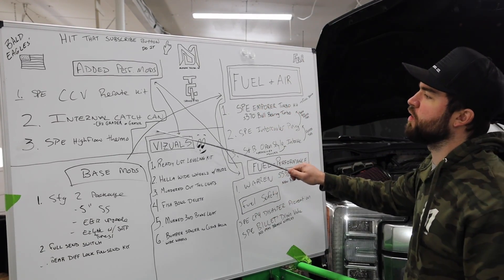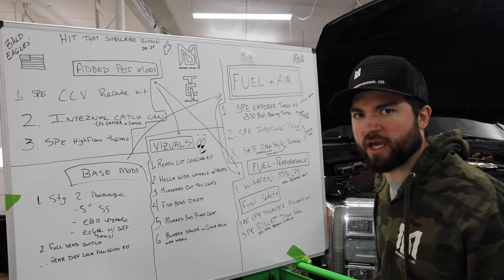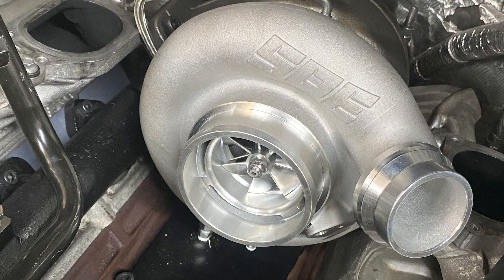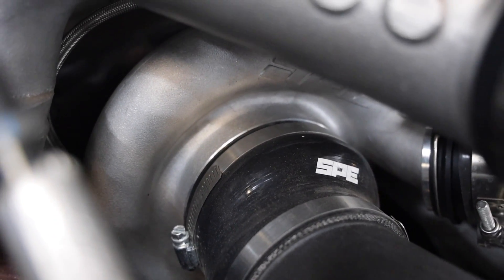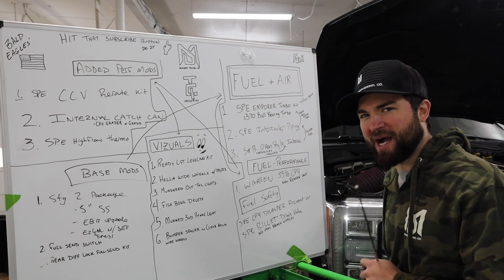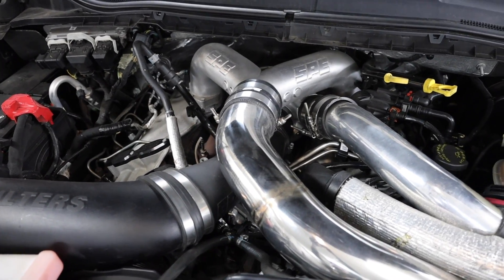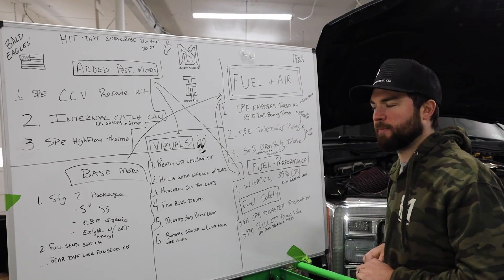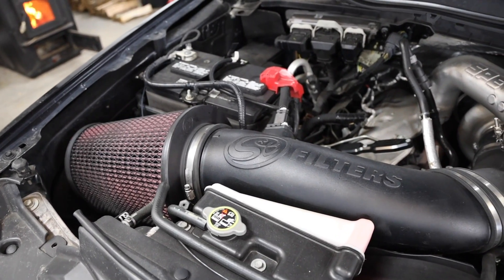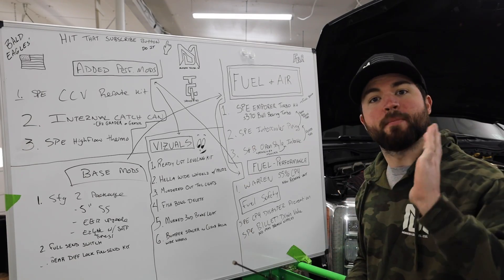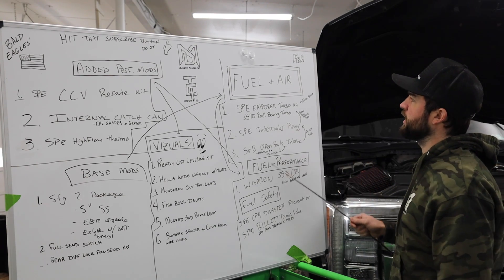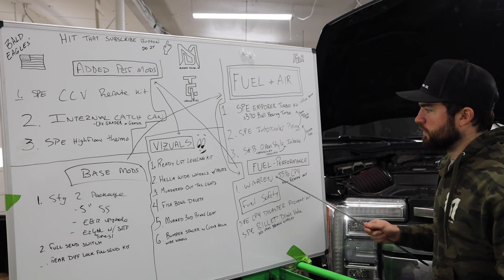Okay, so very first thing on the fuel and air section, I'm running the SPE Emperor turbo kit. Now this is a full send kit with a SPE 370 ball bearing turbo. Now the ball bearing turbo spools way faster than journal bearing, but like I said, we're not explaining stuff in this video. This is just what's on the truck. Moving down, number two, I'm running the SPE intercooler piping. Now the stock intercooler piping is whack. Your truck isn't cool unless you got intercooler piping, right? Get it? Feeding the intercooler piping, moving down on the list, number three is the S&B open style intake. Now this is a massive monster of an intake situation. Massive, massive filter. So the intake feeds the intercooler piping, intercooler piping feeds a turbo kit and you are going full send.